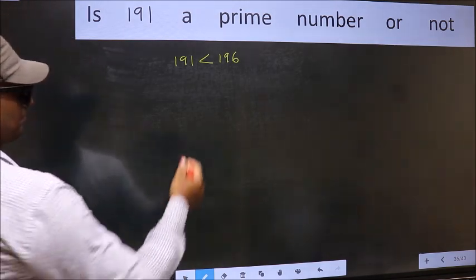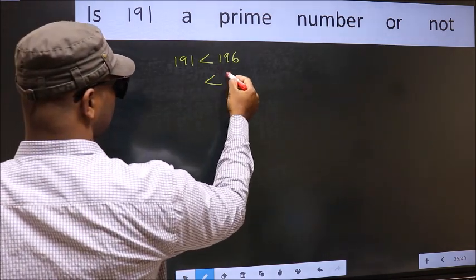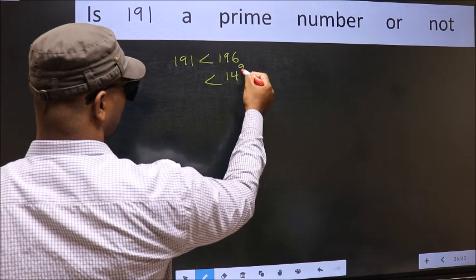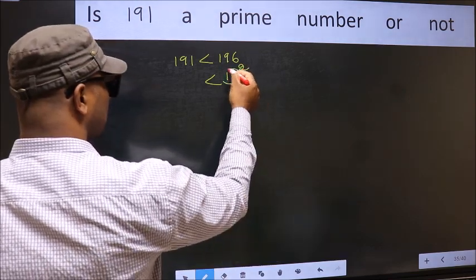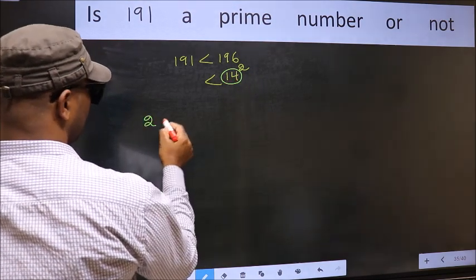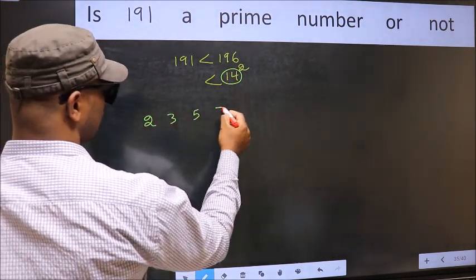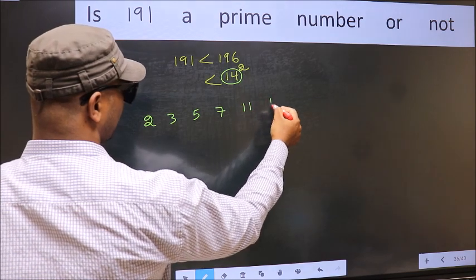Next, 196 is 14 square. Now we write all the prime numbers less than 14. They are 2, 3, 5, 7, 11 and 13.